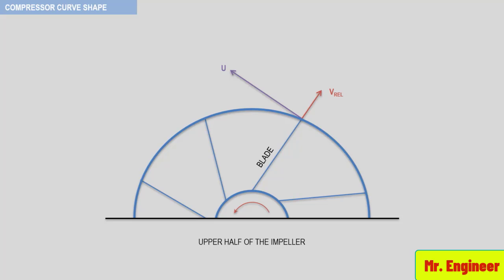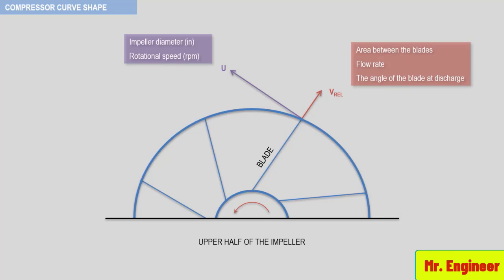The blade tip velocity is a function of the diameter of the blade and the blade rotational speed. The velocity relative to the blade is a function of the area between the blades, the flow rate at that location, and the angle of the blade at the discharge of the impeller. For this discussion, we assume that the velocity relative to the blade exactly follows the blade angle — that is, the slip is equal to zero. This assumption can be used since it will not impact the final conclusion of our discussion.